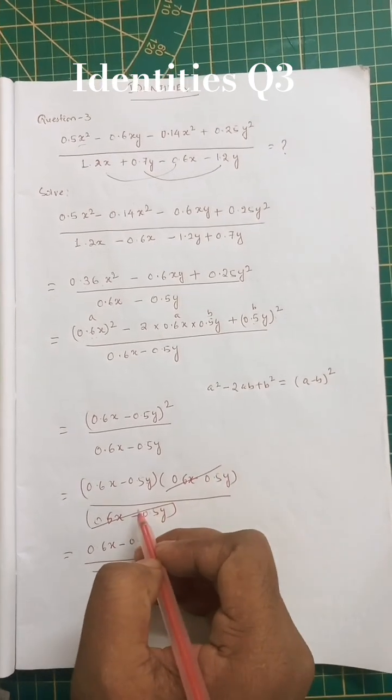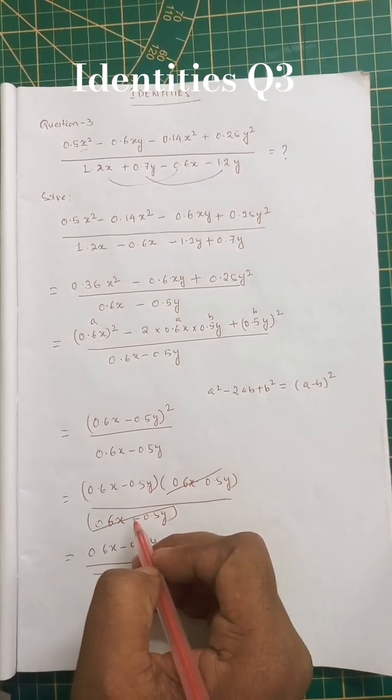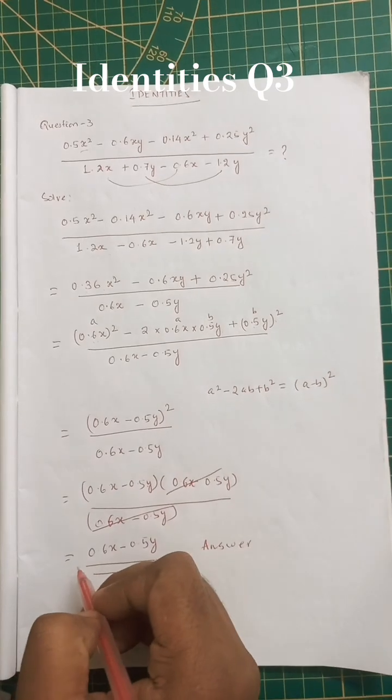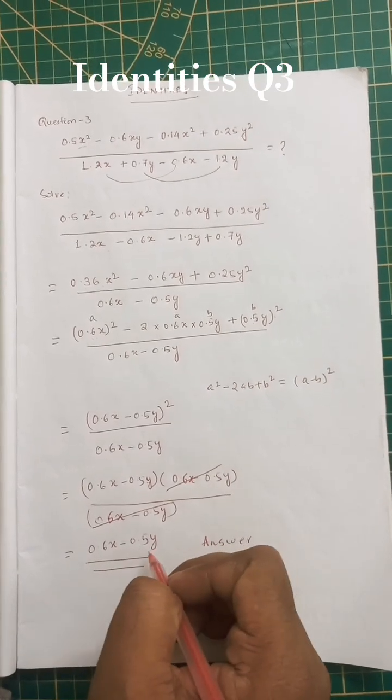We can cancel the numerator and denominator, then the answer is 0.6 x minus 0.5 y.